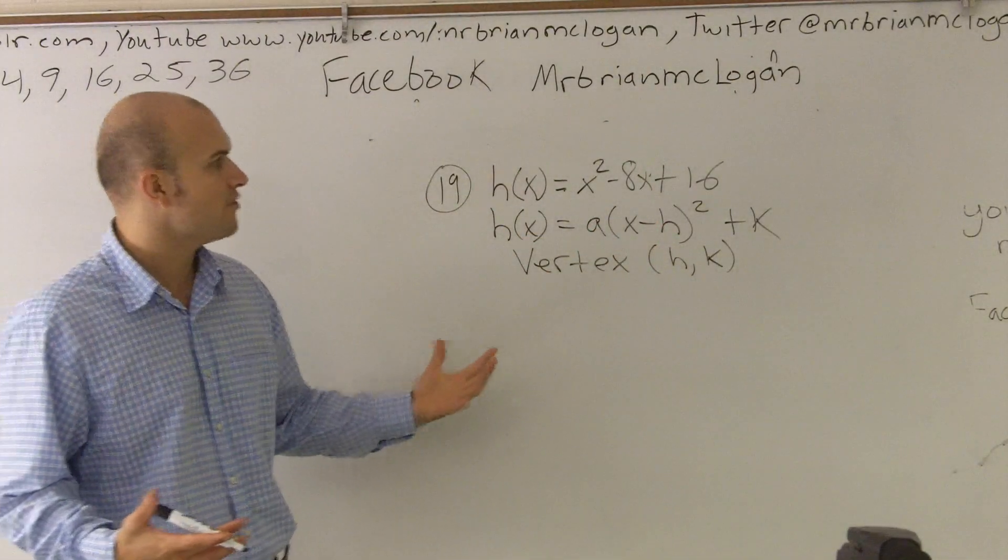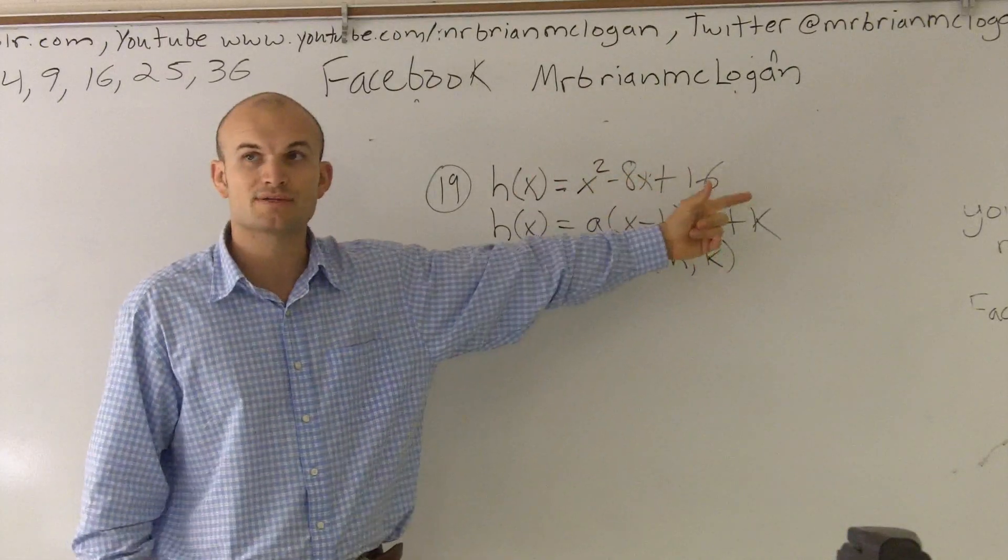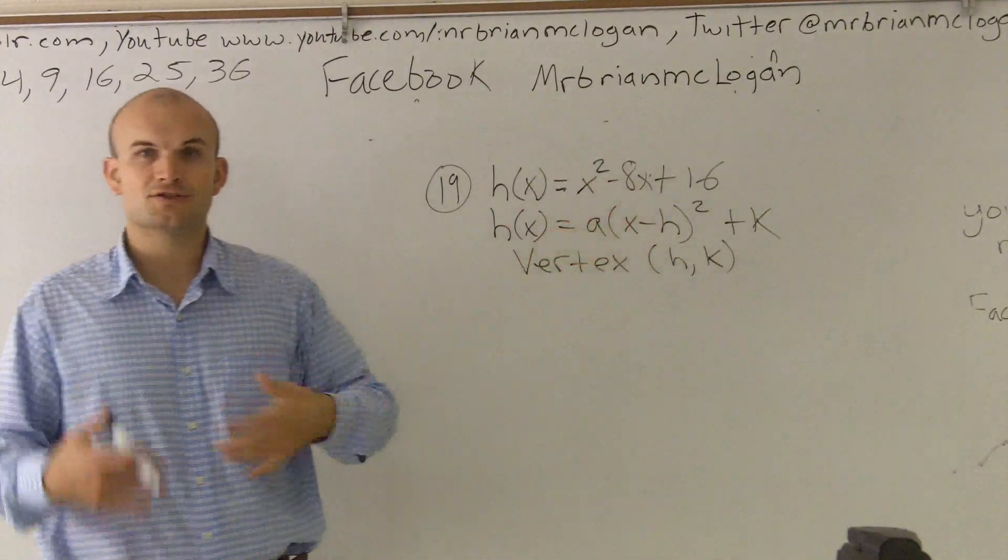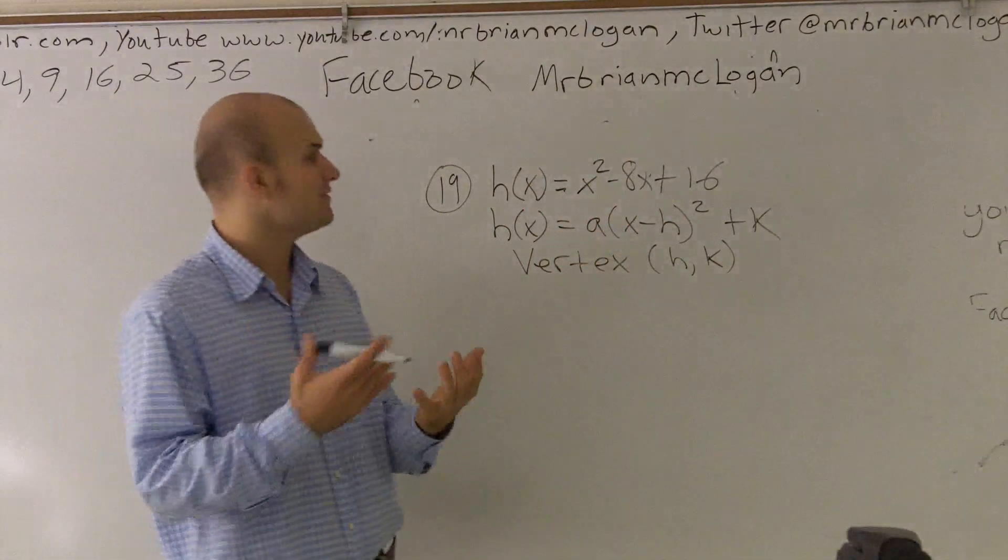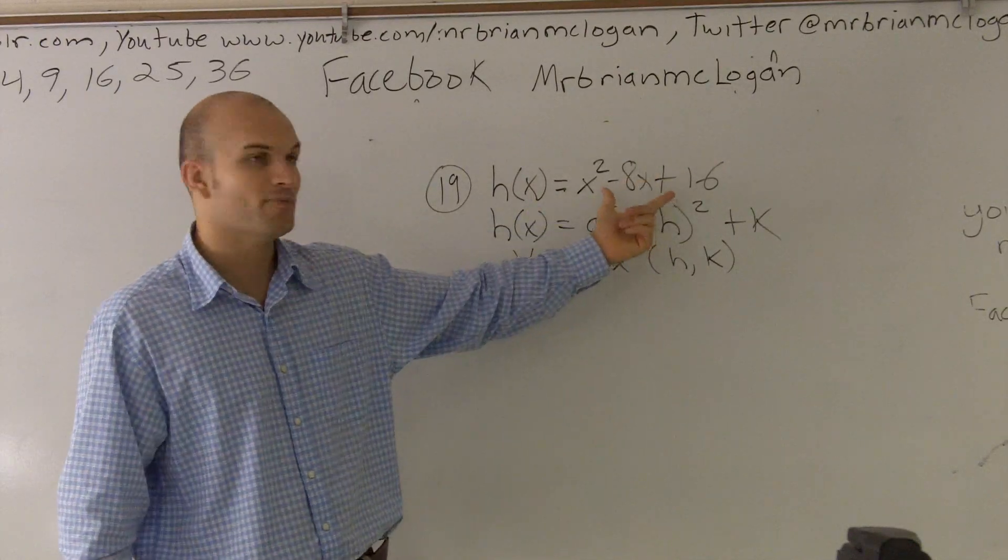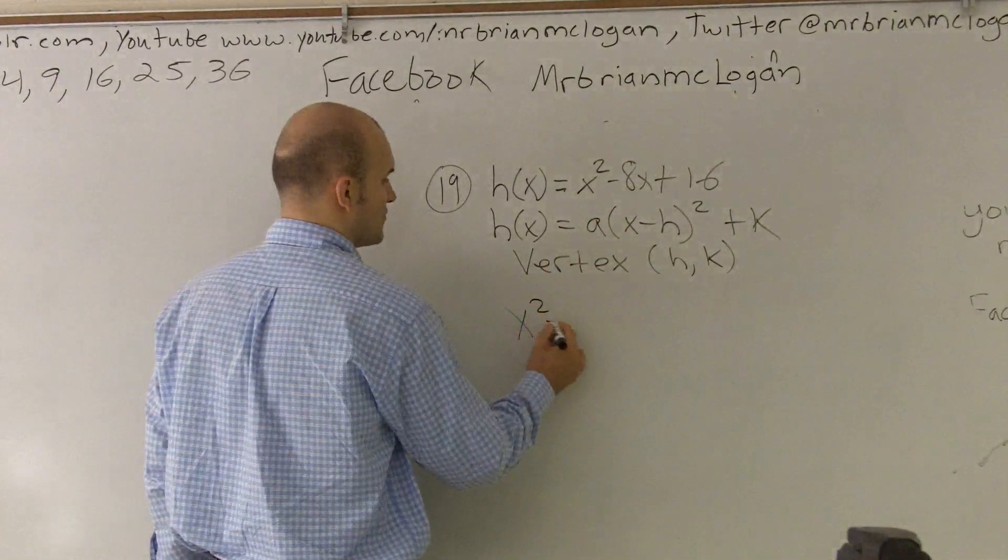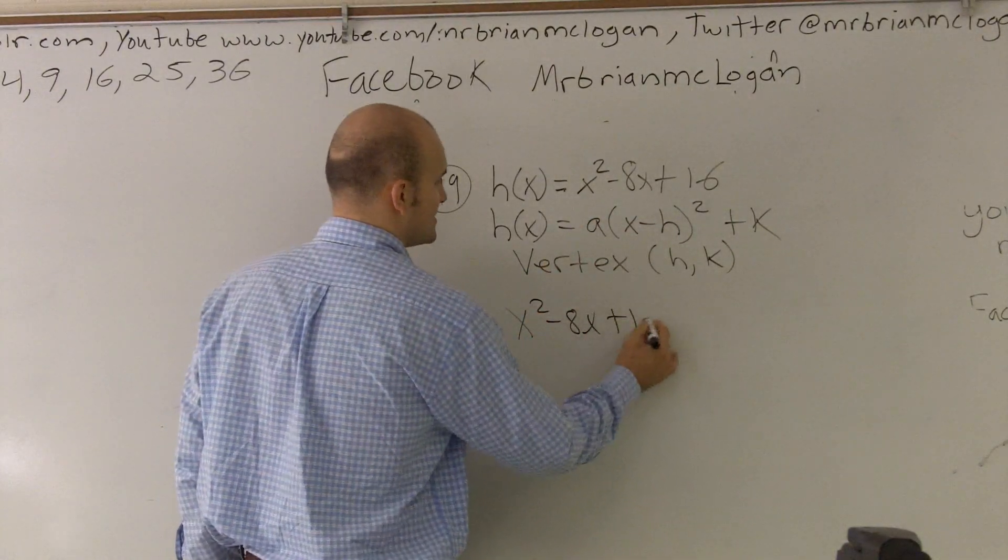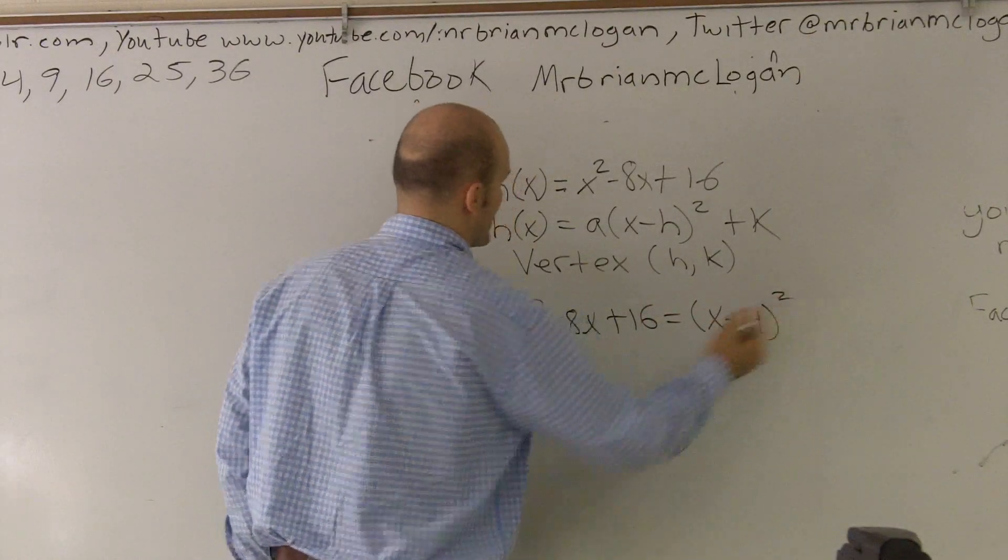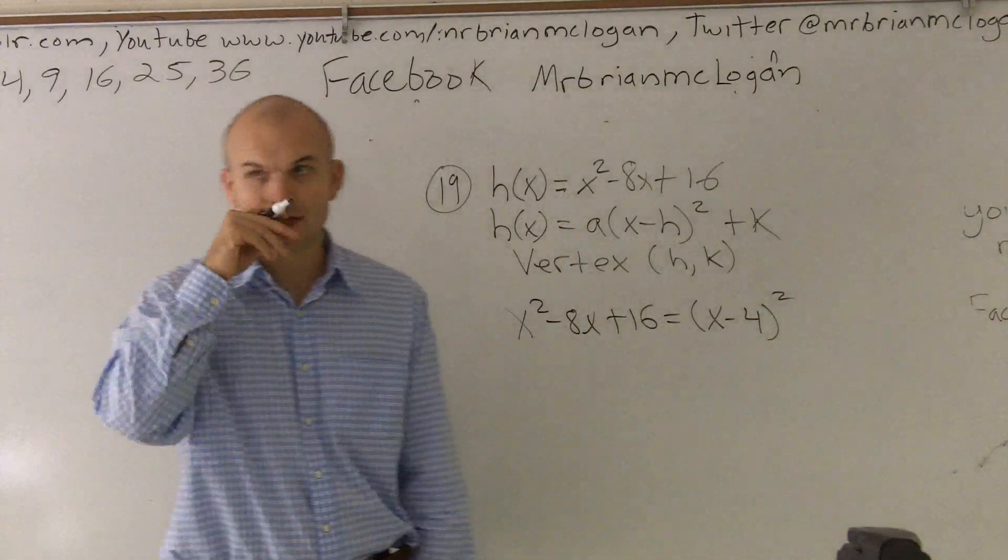Now the way that I'm going to put this into this form is I've got to be able to convert my trinomial, which has three terms, into a binomial squared. And the way to do that is you can complete the square. However, fortunately for us, I already noticed that this is going to yield me a perfect square. And what do I mean by that? What I've seen is I can rewrite x squared minus 8x plus 16 is the same thing as saying (x minus 4) squared.